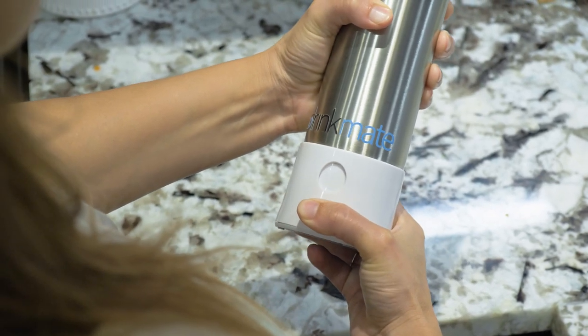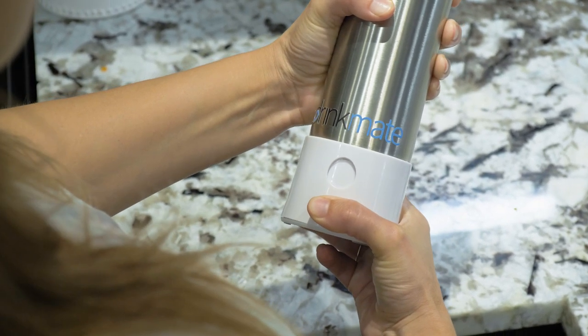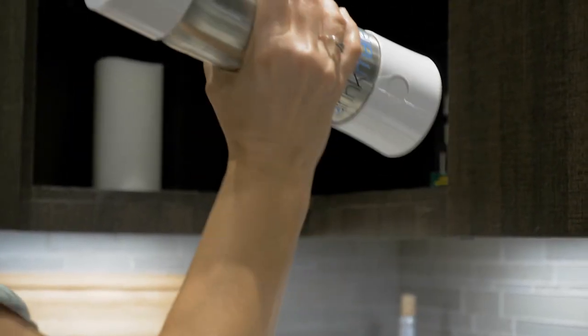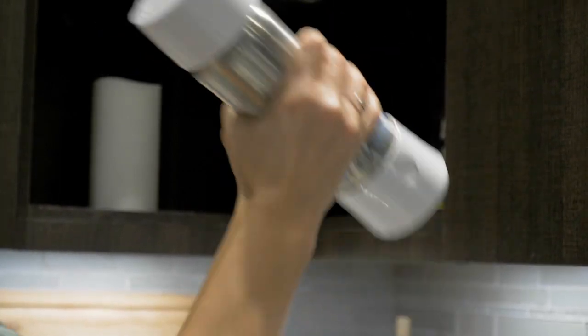To sparkle your drink, pull the bottle upright and turn the bottom cap counterclockwise to activate the cartridge. Shake the bottle up and down five or six times to get a better mix of CO2 with your beverage.